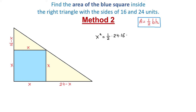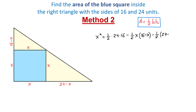Now we need to subtract the areas of the two smaller triangles. The area of the top triangle is one-half times x times 16 minus x. The area of the bottom-right triangle is one-half times 24 minus x times x. So we subtract both of these from the large triangle's area.